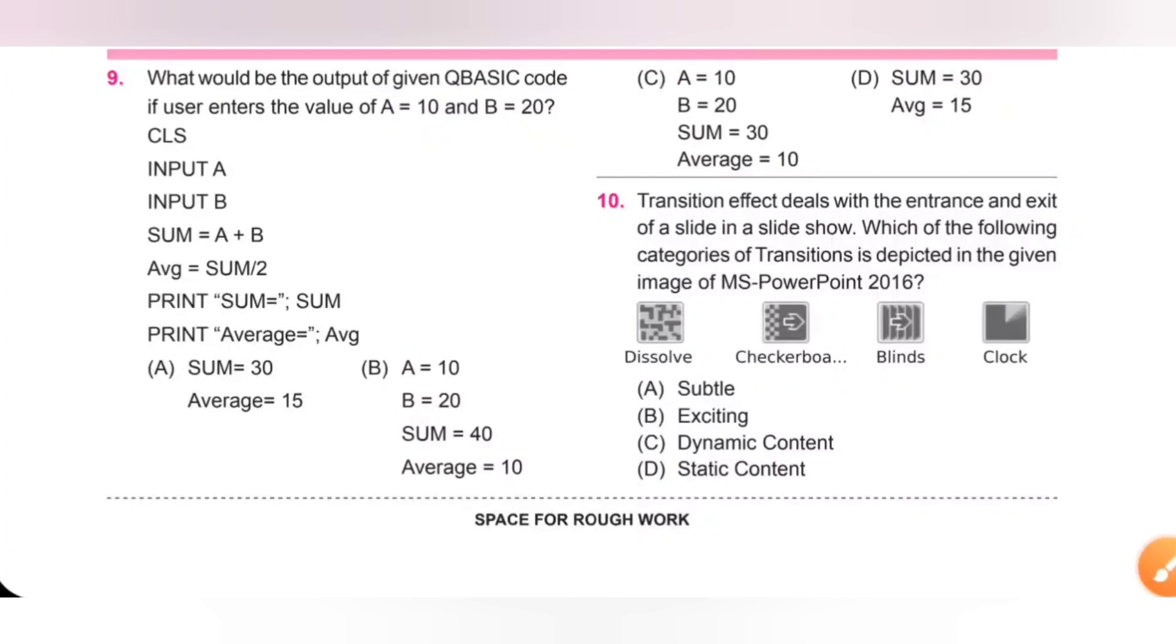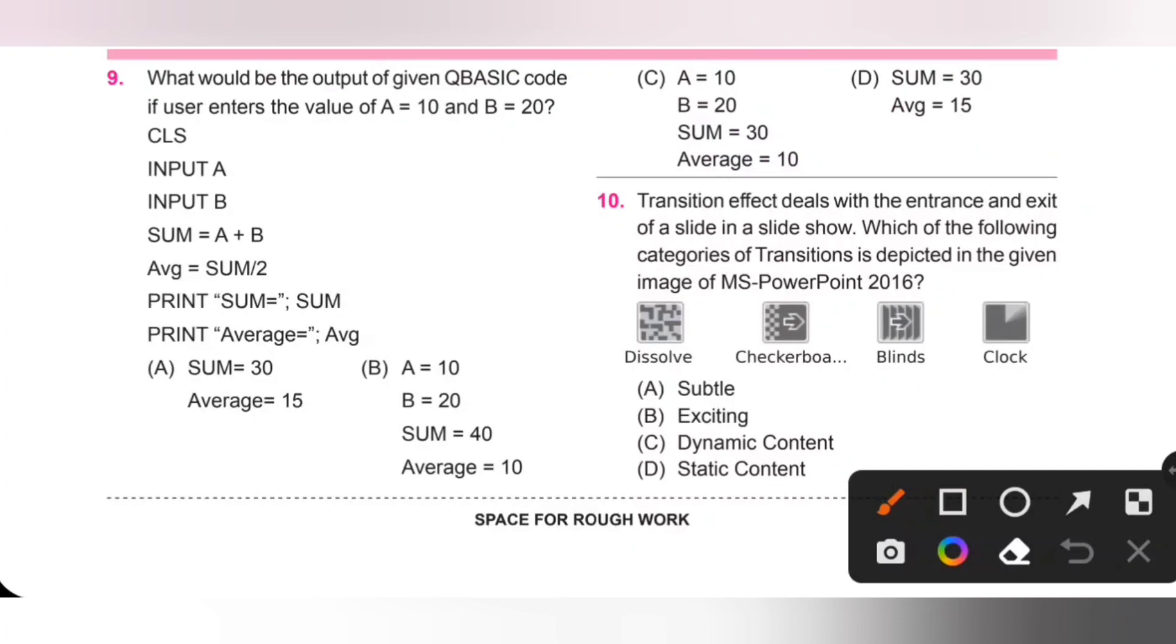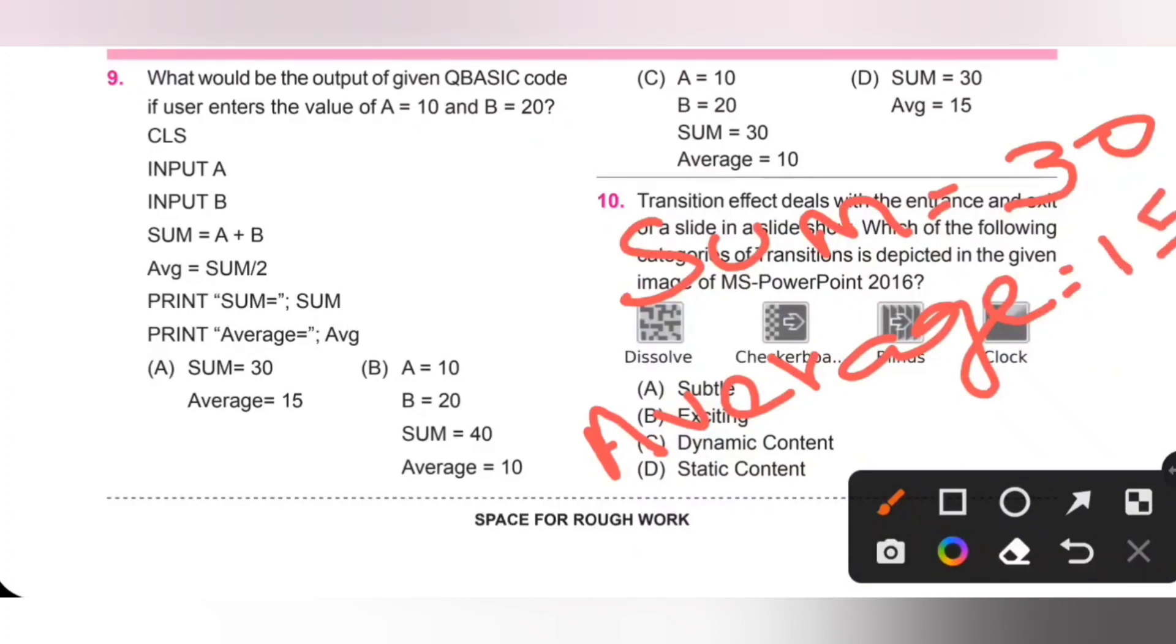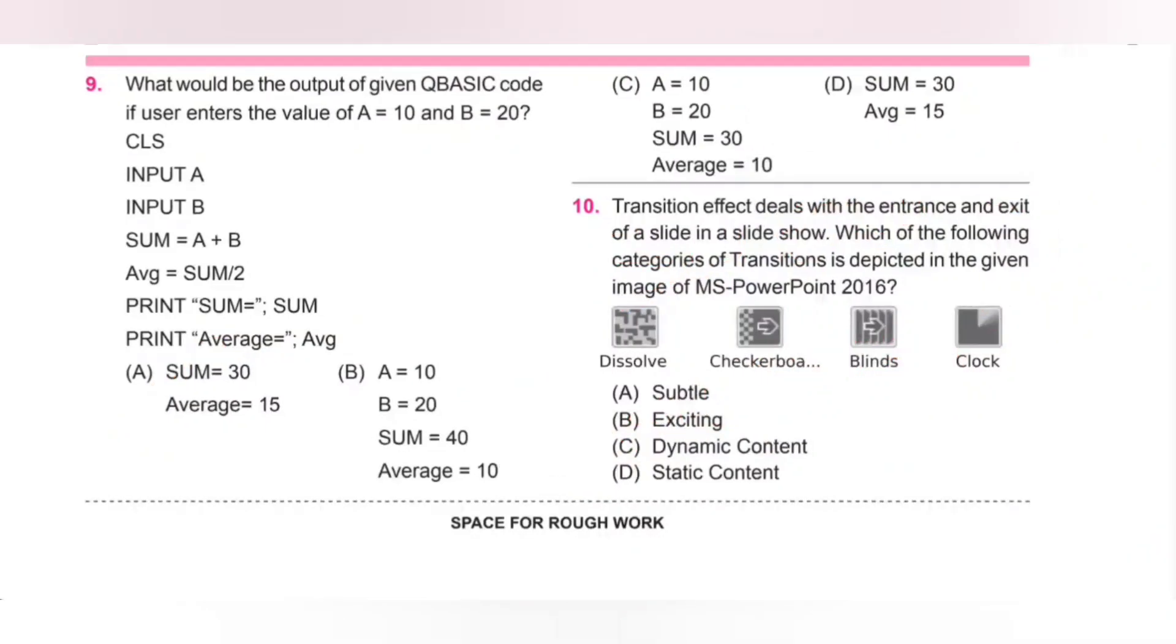Ninth one: What would be the output of given QBasic code if user enters the value of A equal to 10 and B equal to 20? CLS, input A, input B, sum equals A plus B, average equals sum divided by 2. Print sum means it will print sum. Sum equals 30. Next, print average. Average equals sum divided by 2, that is 15. The output will be sum equals 30, average equals 15. Option A is the correct answer.